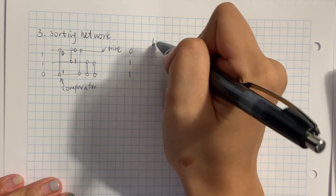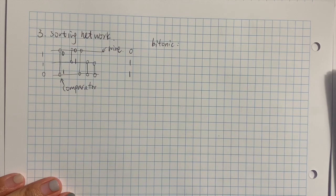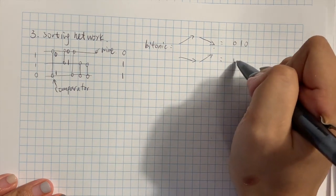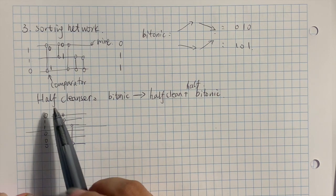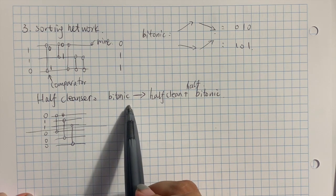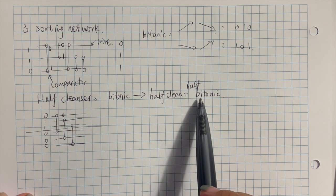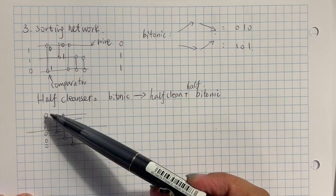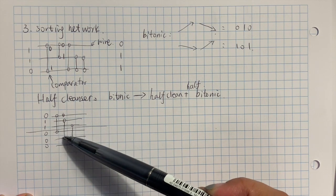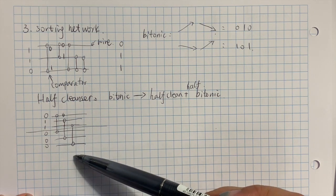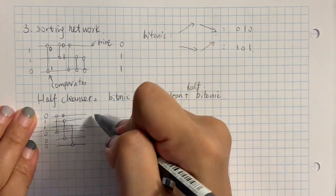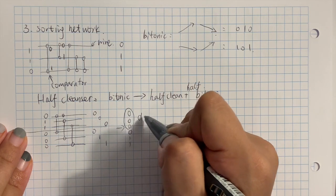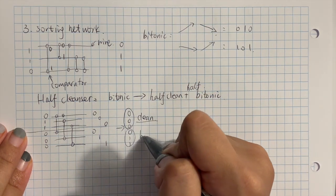We are also going to introduce a notion called bitonic. A bitonic sequence is a sequence of numbers that first increases and then decreases, or first decreases and then increases. For example: zero, one, zero or one, zero, one. Next, we introduce what is called a half cleanser. It takes in a bitonic sequence and outputs a sequence where half of the numbers are clean and half are still a bitonic sequence. We consider an example: we divide the sequence into two halves, connect each element to its counterpart, apply comparators, and end up with zero, zero, zero, one, one — the left half is clean and the right half is still a bitonic sequence.